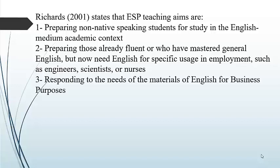The third aim is responding to the needs of materials for English for business purposes. When we see the origin of ESP, we are going to see some of the reasons for ESP's emergence, and one of these reasons was the expansion in commerce. There was a flood of courses and materials for business purposes to fulfill the necessity to learn English for economic purposes, so one of the ESP teaching objectives was to respond to those specific needs.